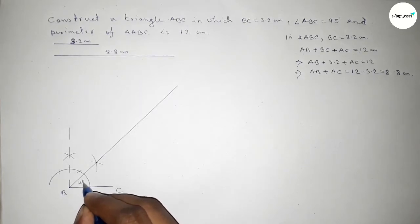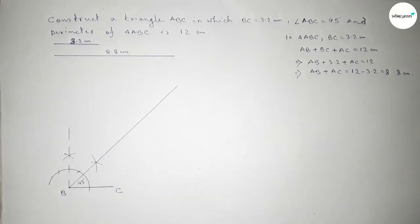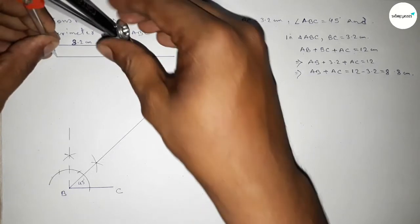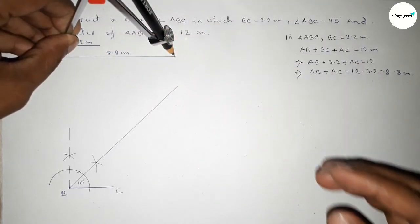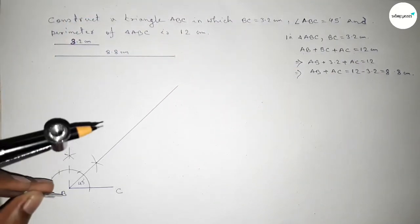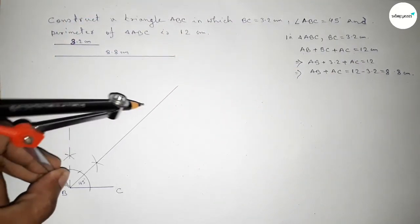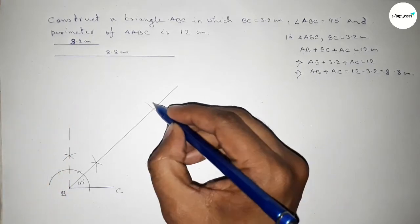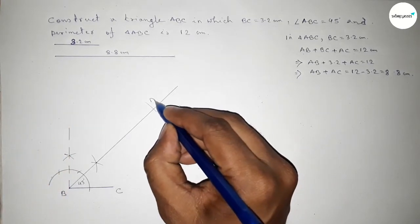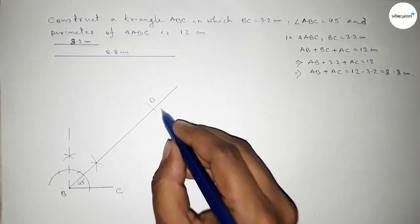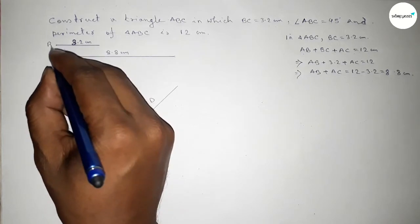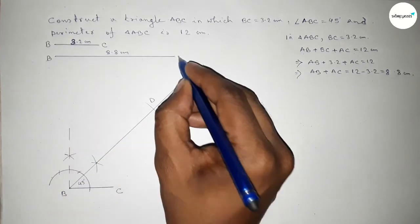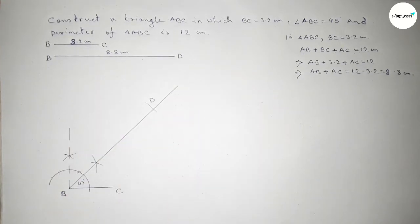Now taking the length 8.8 centimeters using the compass and putting the compass at B, cutting at point D. So this is the BC line and this one is the BD line.